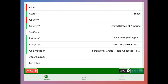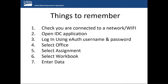Once you log into IDC, you will see red and green bars on the left side of the screen. Red means it's a required field; green means it's auto-populated. When using IDC, make sure you're connected to the network or Wi-Fi before you open the app. Once open, use your e-authentication username and password. Once logged in, select your office, then your assignment, then your workbook. Your assignment and workbook titles depend on how your office names them, so make sure you know the proper names.